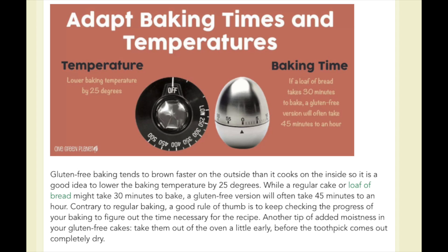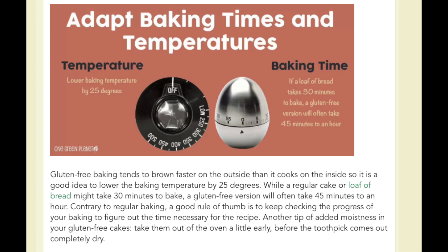Regardless of the ingredients you're using, one thing to remember with keto baking is that your recipes will usually brown faster on the outside. We recommend dropping your temperature by about 25 degrees Fahrenheit, and because you're using a lower temperature you're going to need to increase the baking time. For example, if you are baking for 30 minutes, you'll need to up the time to about 45 minutes — and you'll need to experiment depending on each recipe you try.